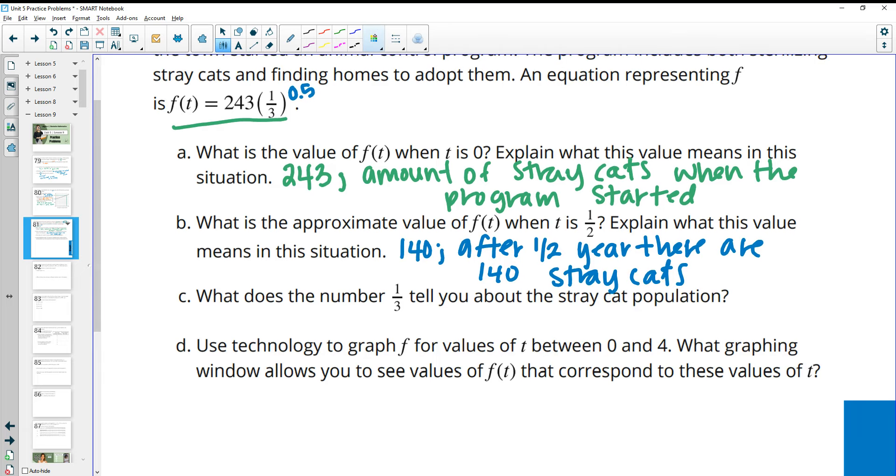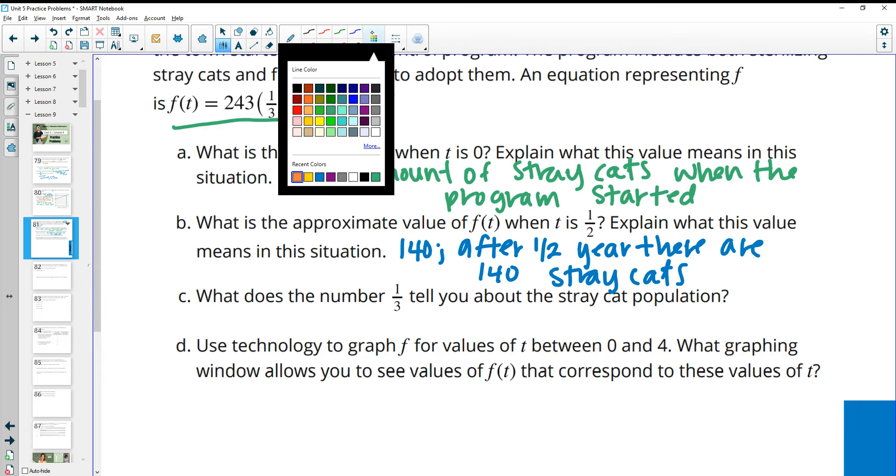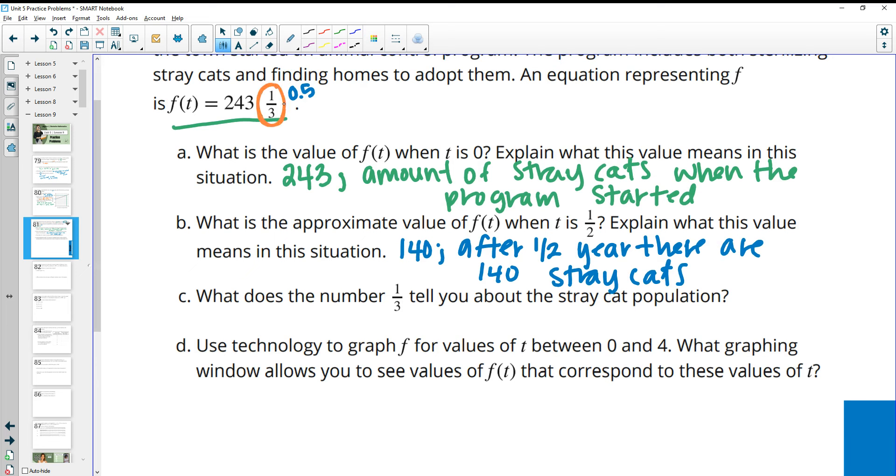And then what does the number one third tell us? What's this one third in the equation tell us? That's the growth factor. In this case, the growth factor is decreasing. So this tells us that each year there are one third less stray cats. The number of stray cats is reduced by one third each year.